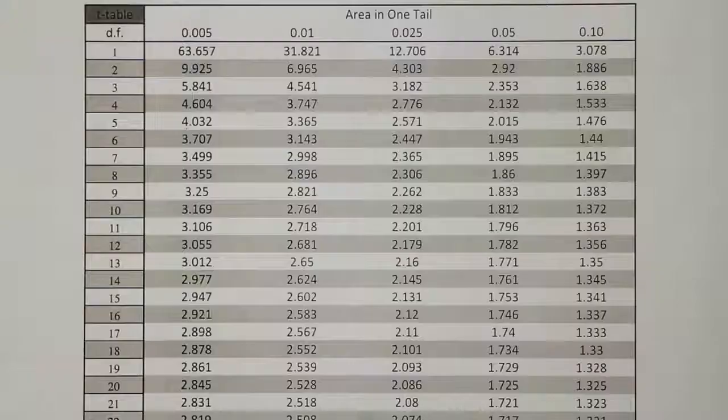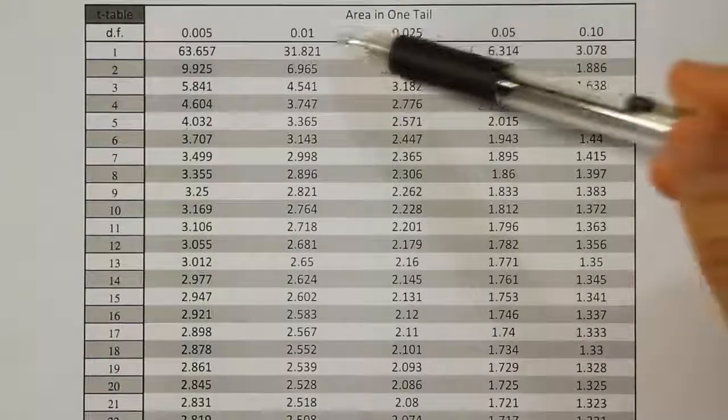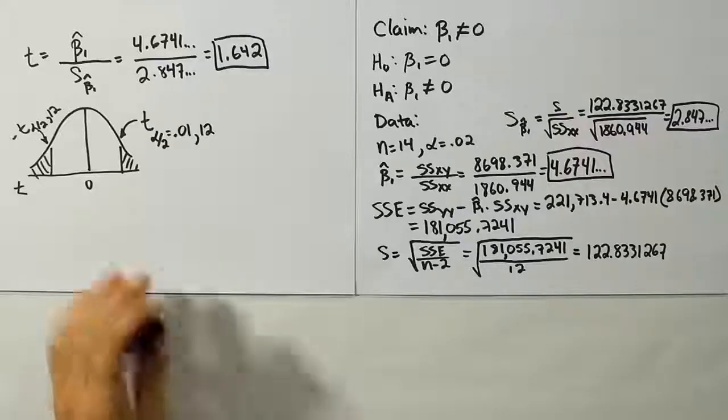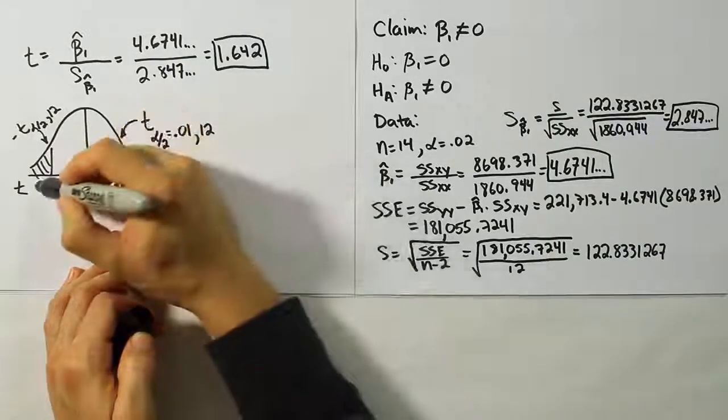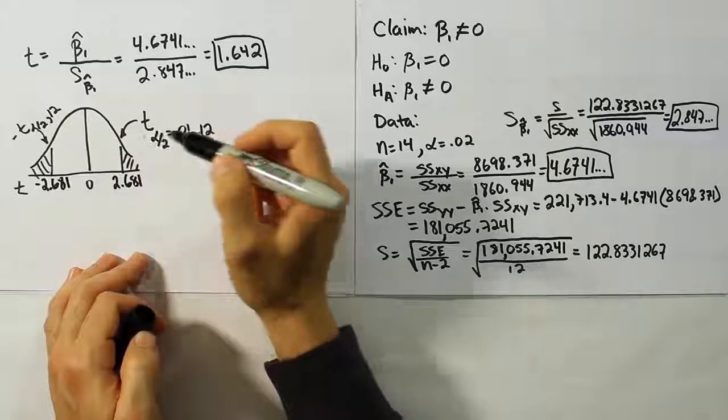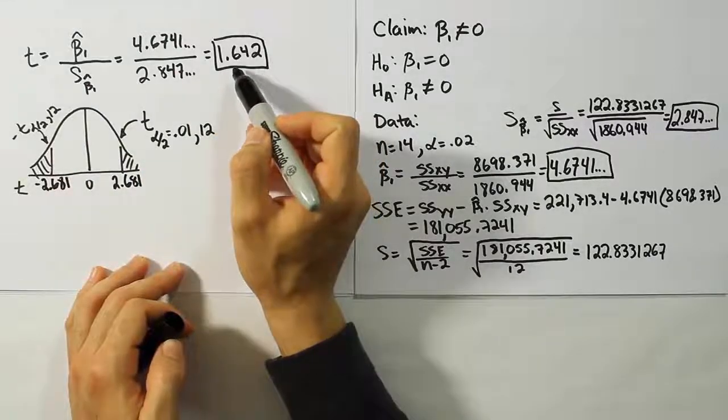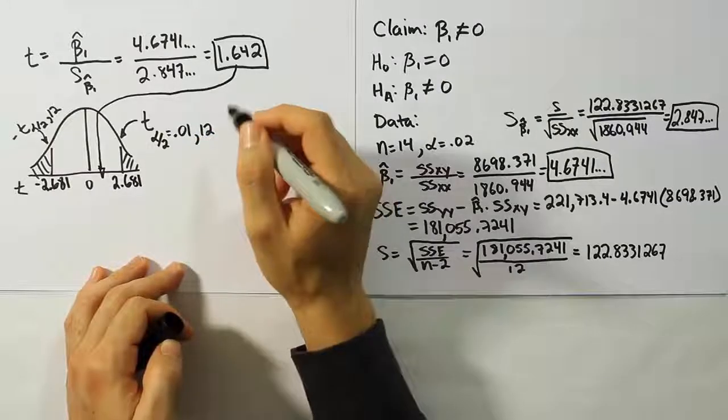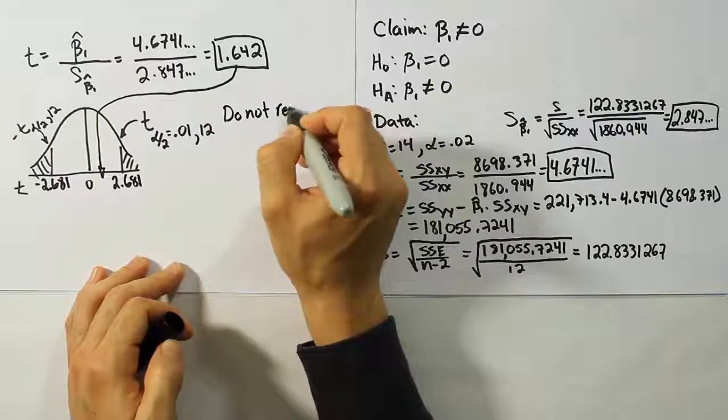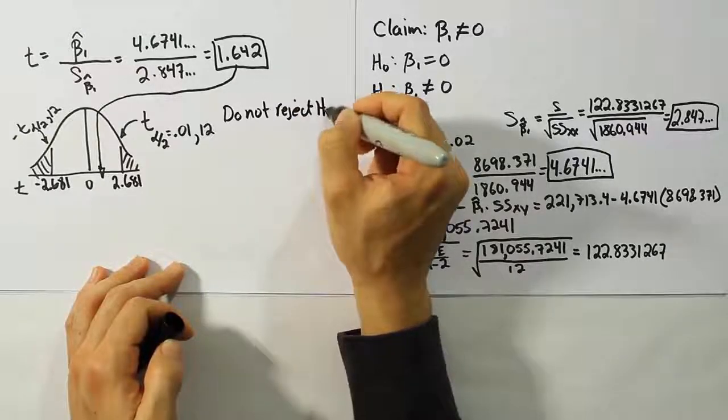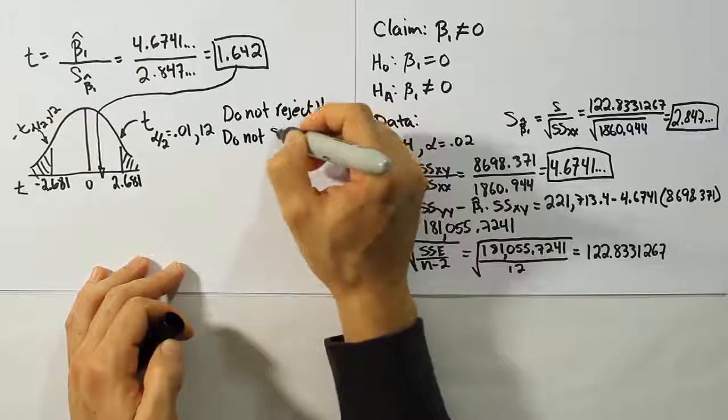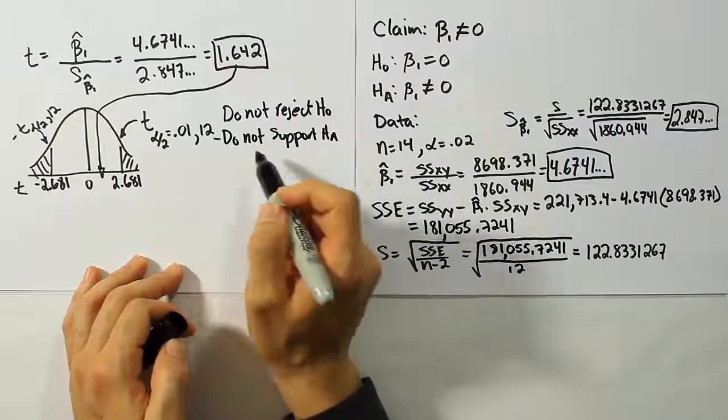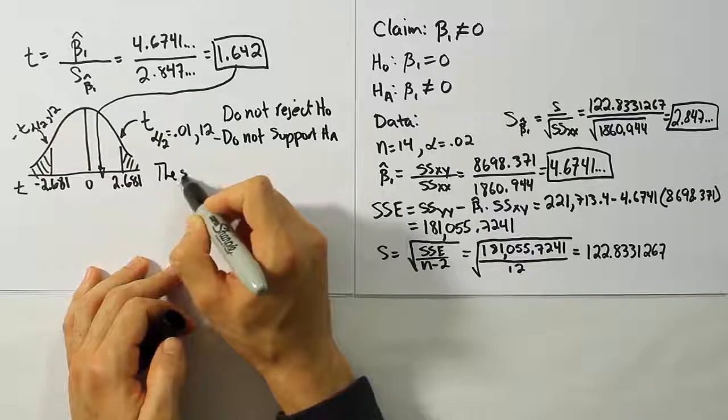We find the answer 2.681. So our critical values turn out to be 2.681 and negative 2.681. Now we look at where our test stat lands with respect to the rejection region. It lands over here in the white space. So we're going to say, do not reject H0. Do not reject the null hypothesis, and do not support HA. Do not support HA is how we're going to word the final answer, because our claim is the same as HA. So the sample data does not support the claim.